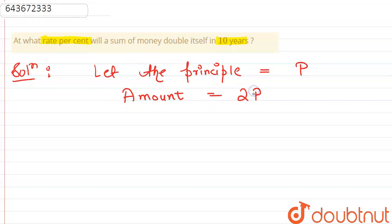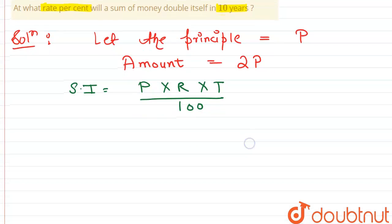So we know that the simple interest is P (principle) into rate of interest into time by 100. So here SI is amount minus principle.